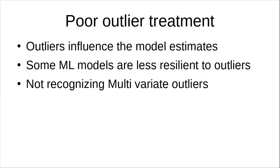The first one is poor outlier treatment. Outliers are very detrimental to model performance — they are extreme observations. You should not have them in your training dataset, but oftentimes this is ignored. As a modeler, you sometimes ignore these outliers, and what happens then is that the model estimates are somewhat biased, and when you actually implement your model, it does not perform as well as expected.